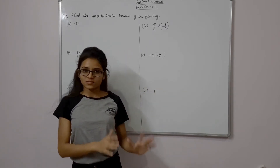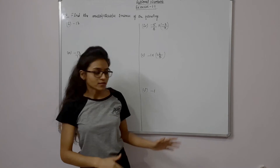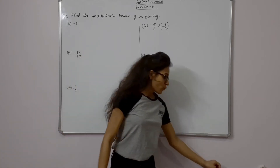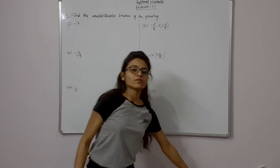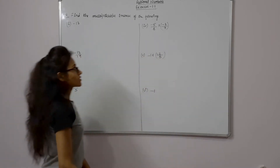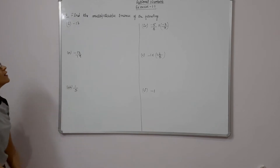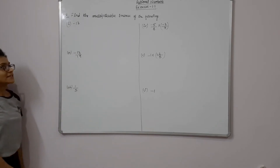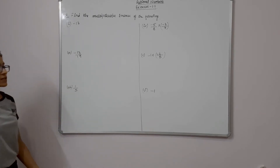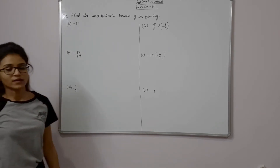We have done question number 3. Now question number 4. Exercise 1.1: Find the multiplicative inverse of the following.